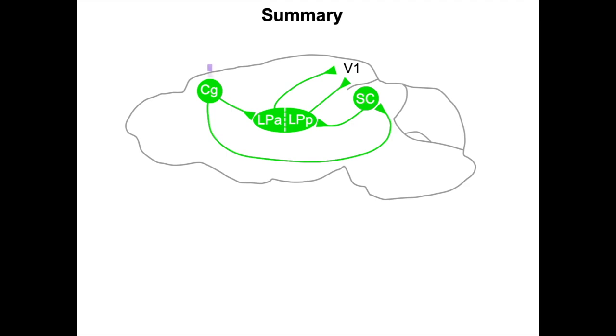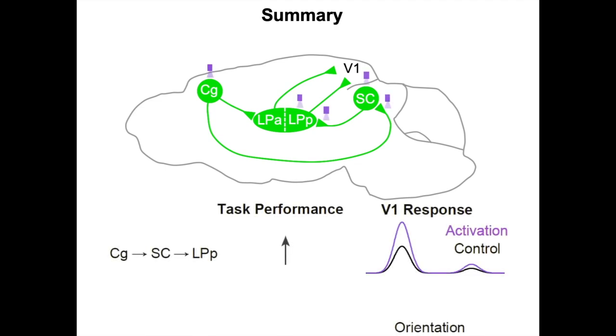In summary, activating or inactivating Cg corticotectal neurons strongly modulates visual behavior. Activating each stage of the Cg to SC to posterior LP pathway enhances behavior and V1 responses. A subset of SC-projecting Cg neurons send axon collaterals to anterior LP. Activating each stage of the Cg to anterior LP pathway also enhances behavior and V1 responses. Here, we show that corticotectal neurons in mouse anterior cingulate cortex exert powerful top-down regulation of visually guided behavior and visual cortical responses through collateral projections to two subcortical targets: the superior colliculus and the pulvinar.